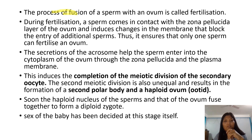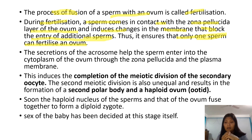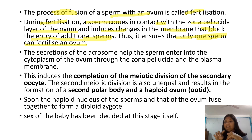The process of fusion of sperm with the ovum is fertilization. During fertilization, the sperm comes in contact with the zona pellucida layer of the ovum and induces changes in the membrane that block the entry of additional sperms. This ensures that only one sperm can fertilize the ovum. Millions of sperms are released, but only one can enter because the zona pellucida membrane blocks all others.